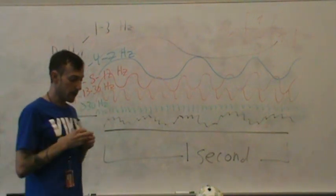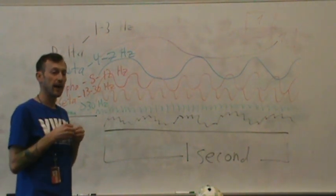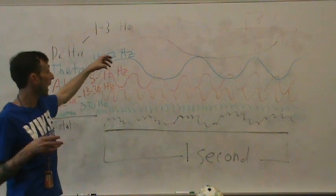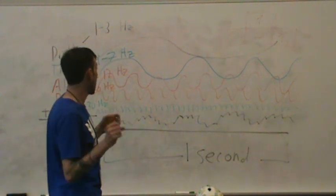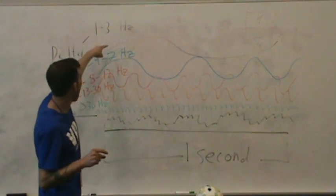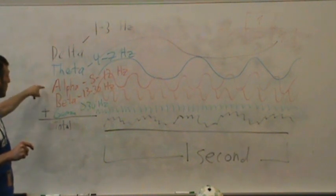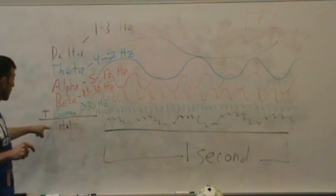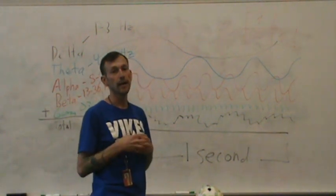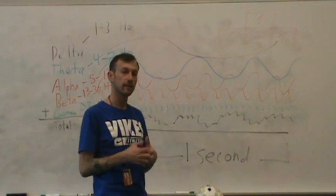Now, importantly, the brain activity, neurons are actually firing at these different oscillation rates at the same time. So, what we can do is we can actually add these together. So, if you take delta plus theta plus alpha plus beta plus gamma, you get your total EEG signal.